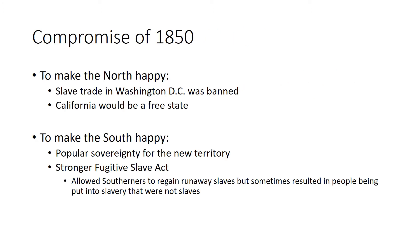In order to make both the North and South happy, there were different components of the Compromise of 1850. To make the North happy, Henry Clay proposed that the slave trade be banned in Washington, D.C., and that California would become a free state. To make the South happy, he took the idea of popular sovereignty — voting for free or slave status in new territories. Also included was a stronger Fugitive Slave Act.